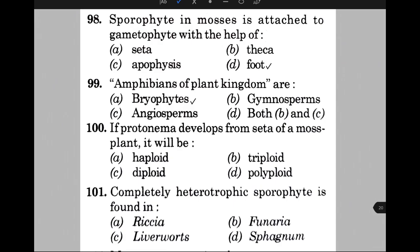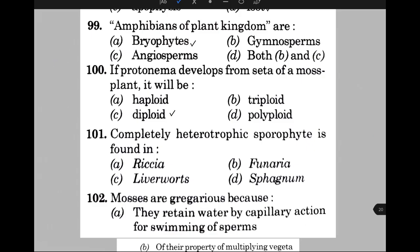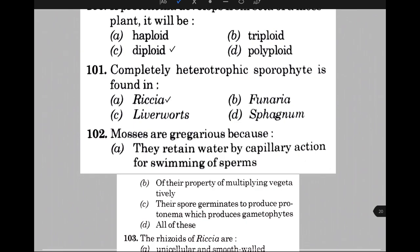Completely heterotrophic sporophyte is found in — the answer is A, that is Riccia. Mosses are gregarious because — the answer is B, that is their spores germinate to produce protonema, which produces gametophytes.